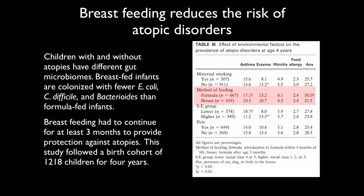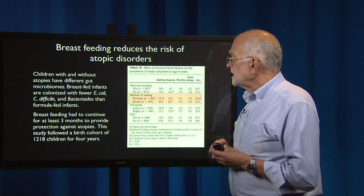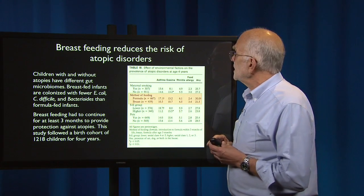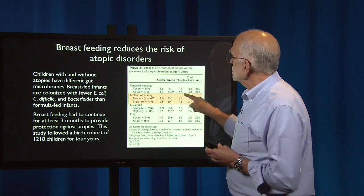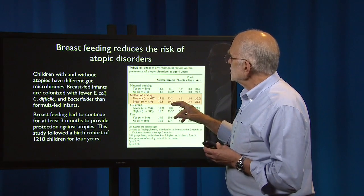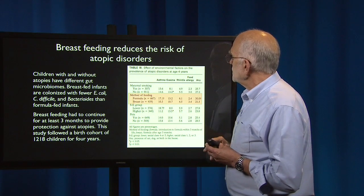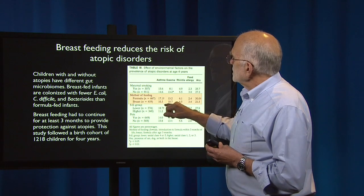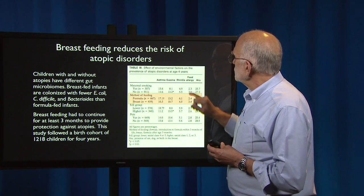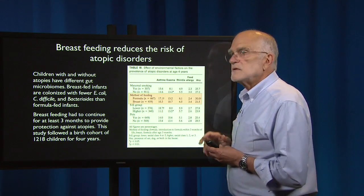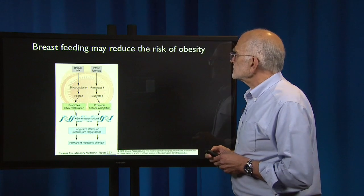Breastfeeding also reduces the risk of atopic disorders. Children with and without atopies have different gut microbiomes. Breastfed infants are colonized with fewer E. coli, C. difficile, and Bacteroides than formula-fed infants, and breastfeeding has to continue for at least three months to produce these effects and provide protection against atopies. One study followed about 1,200 children for about four years, showing that the frequency of asthma, eczema, rhinitis, and food allergy is lower with breastfeeding across all of these different atopies.